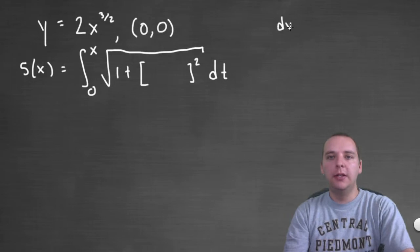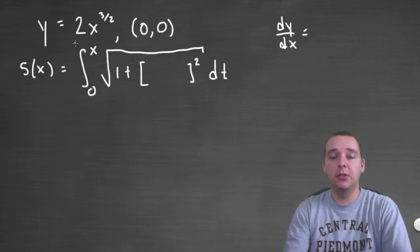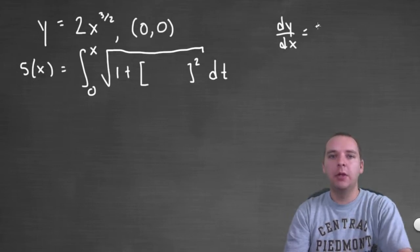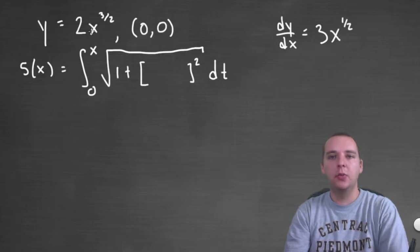So let's find dy dx first. Since y is written as a function of x let's just go ahead and find dy dx. As a simple power rule the 3 halves comes down we get 3x to the 1 half.